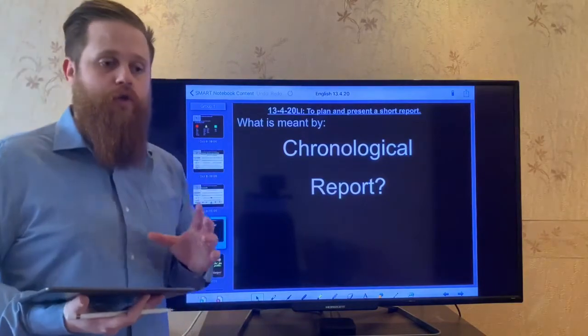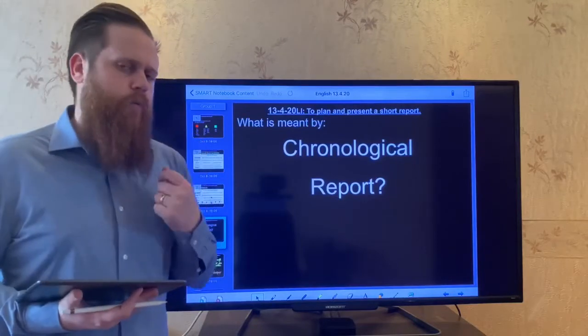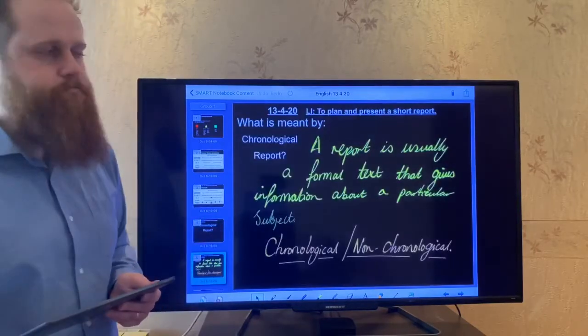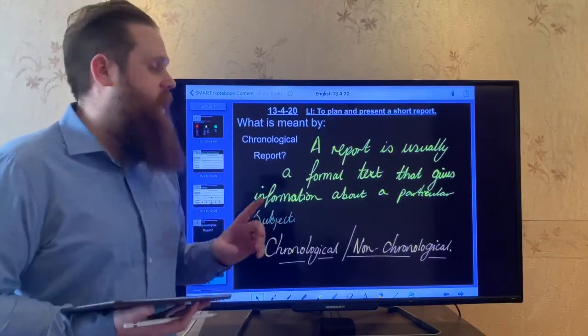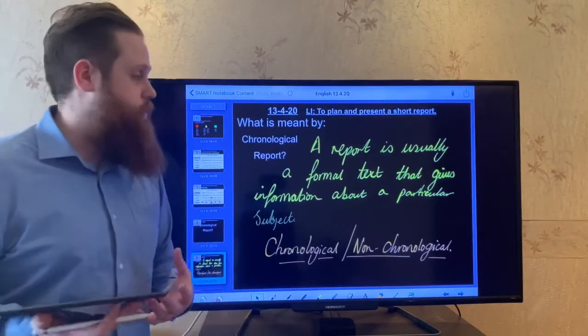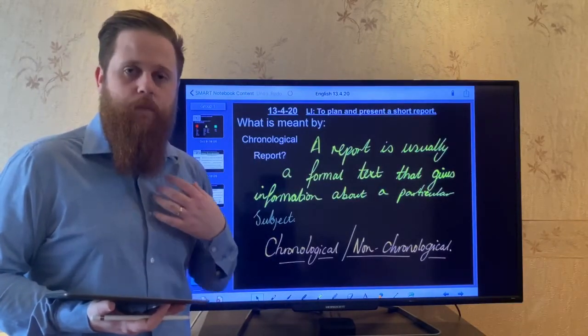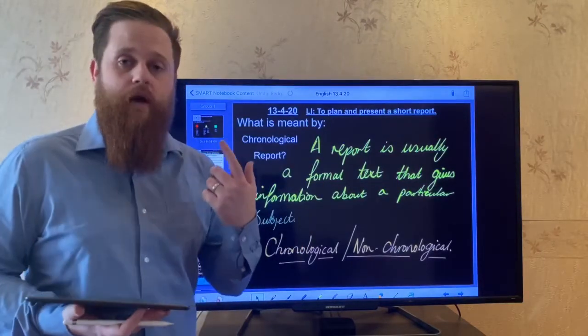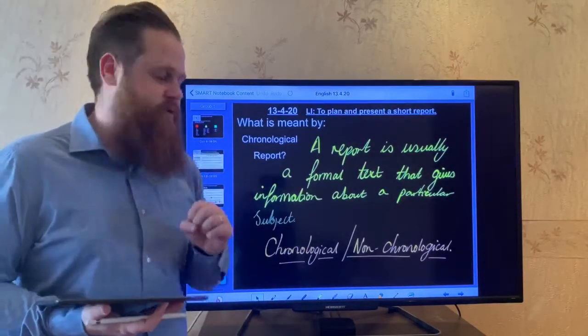Now, today we are going to be looking at chronological reports. Have a little think. What is a chronological report? We have discussed both of these words before. Can you remember what they are? Now then, what is meant by chronological reports? Well, a report is usually a formal text that gives information about a particular subject. So, again, formal, that means no contractions. Something that you might write more seriously than maybe talking to your friends. Think about no contractions, think about the voice that you use, and no slang words involved. And it's about a particular subject.